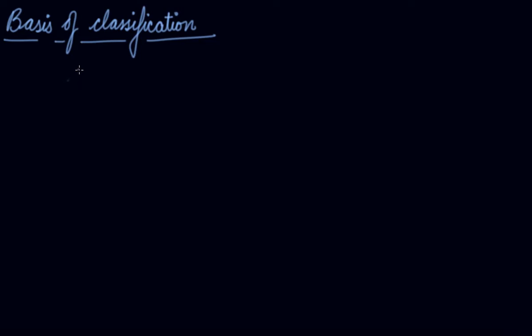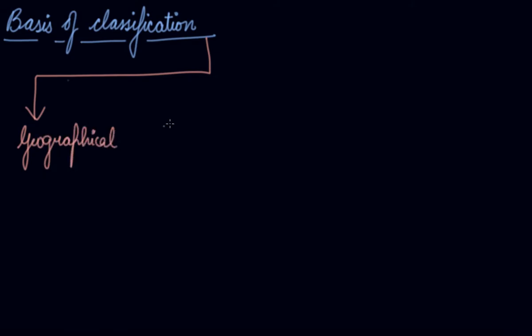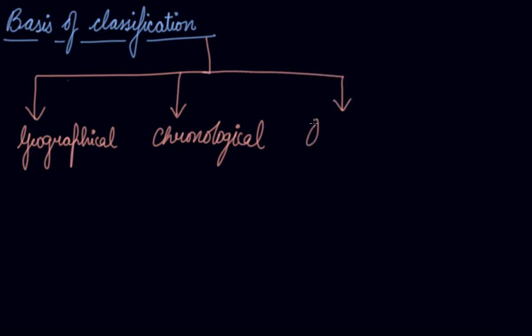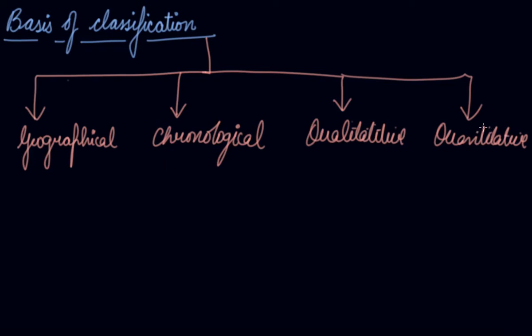In this video we will be studying about the basis of classification — on what basis you can classify your data. We have four bases of classification: number one is geographical, number two is chronological, number three is qualitative, and number four is quantitative. Further, qualitative is divided into two parts.